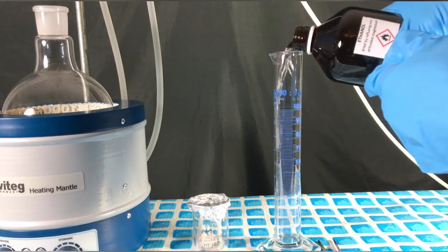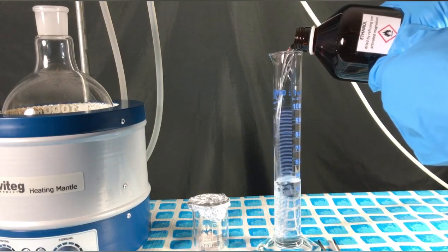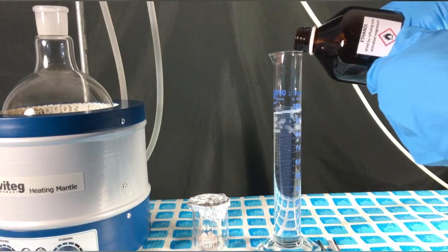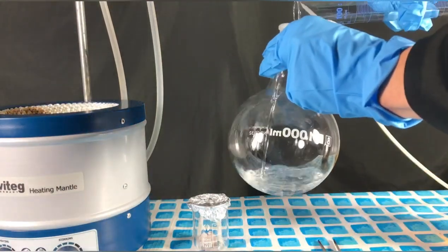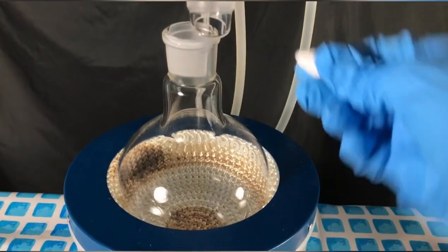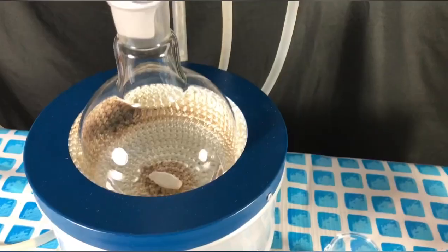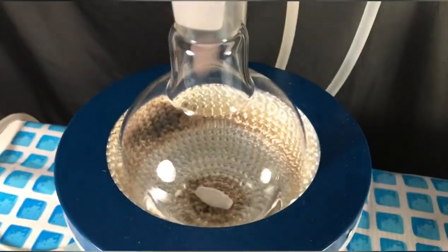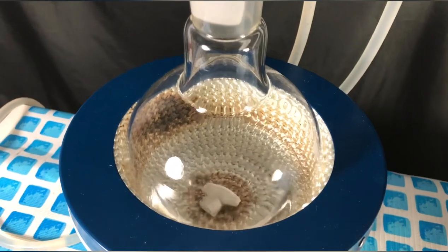Afterwards, 125 milliliters of dry ethanol were measured out and added to a 1 liter round bottom flask. A stir bar was placed into the flask. Then all of the metallic sodium chunks were directly thrown into the dry ethanol.